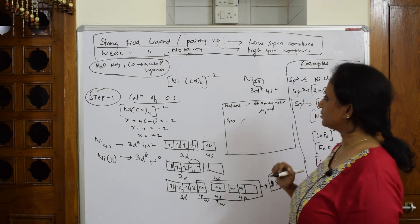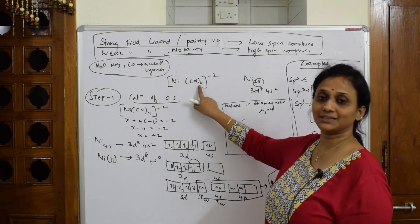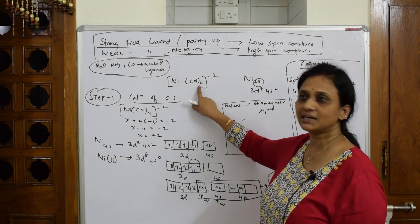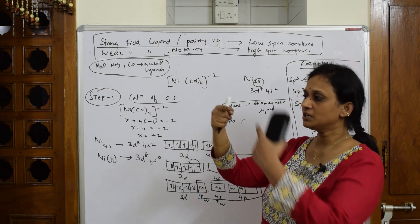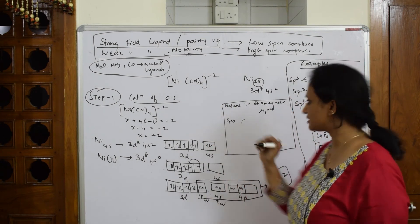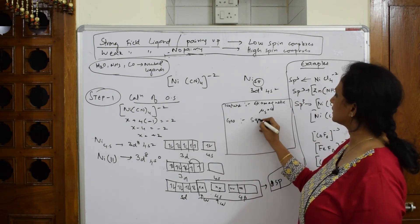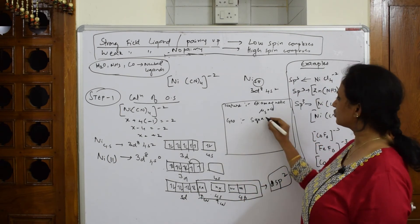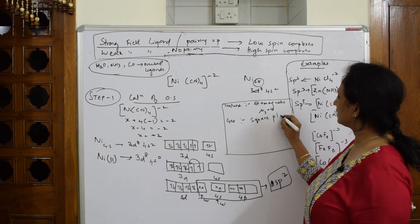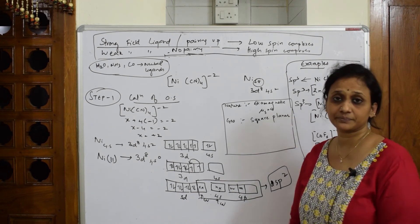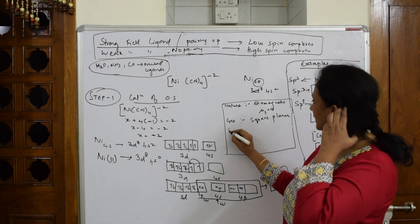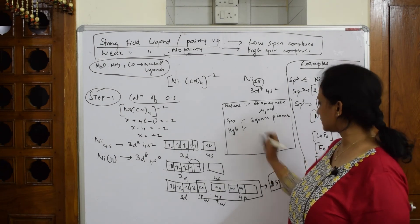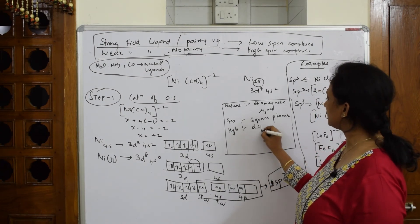Next, geometry. Here the geometry, when you observe, how many are there around metal atom? Four means 1, 2, 3, 4. Four, that is your square planar geometry. If it is three, it is called tetrahedral sp3. Now four means square planar, four corners of a square. Hybridization which you observe is dsp2.